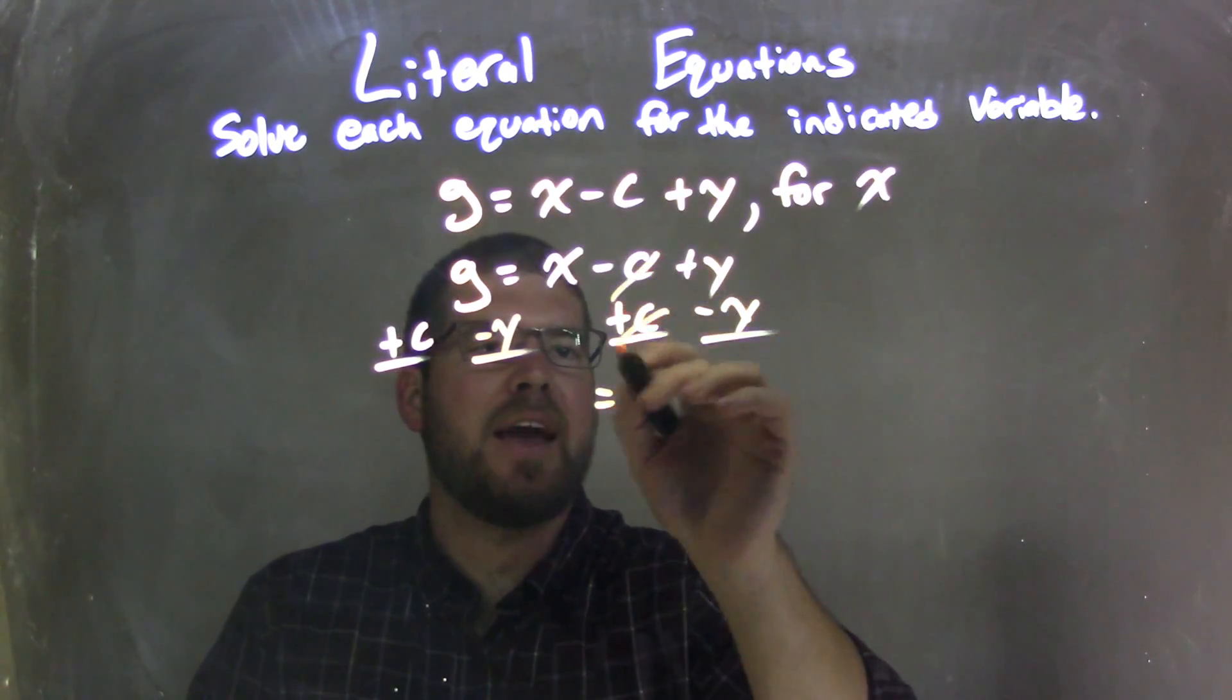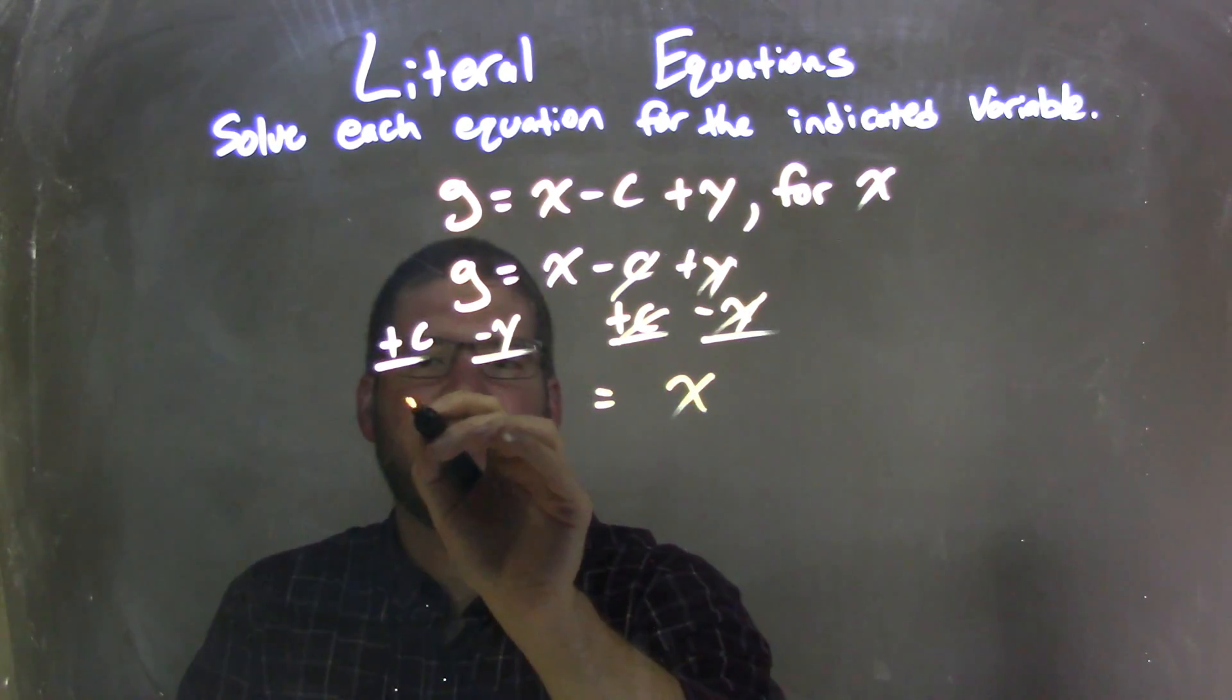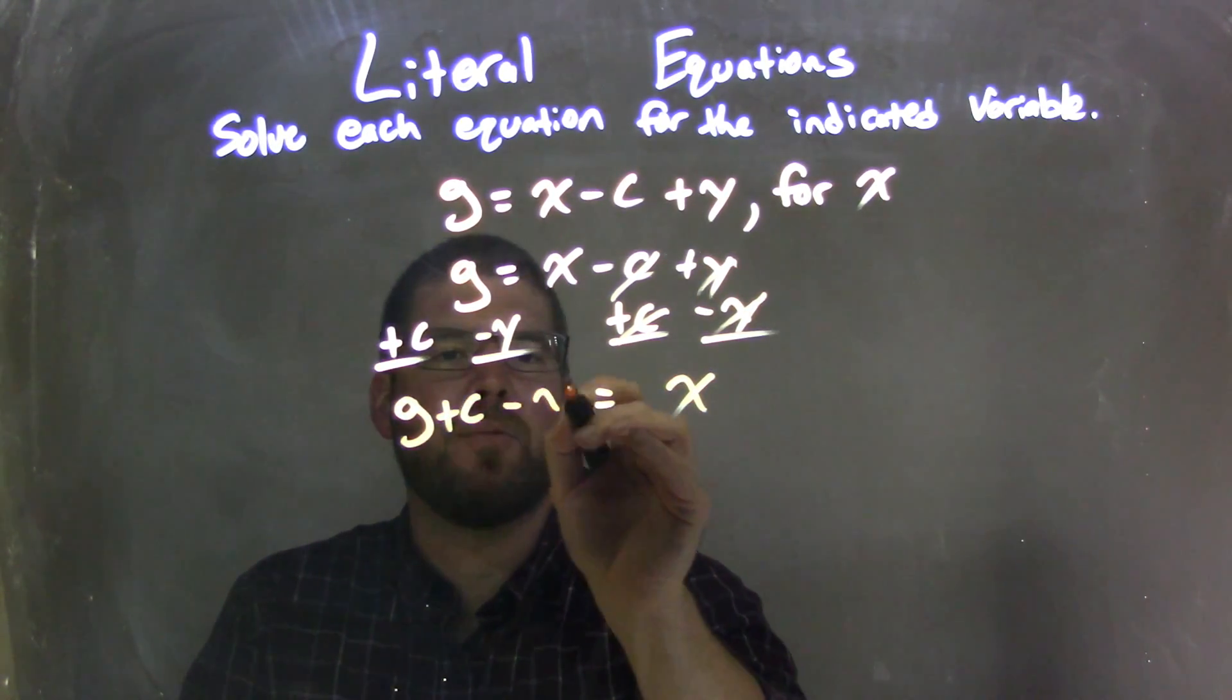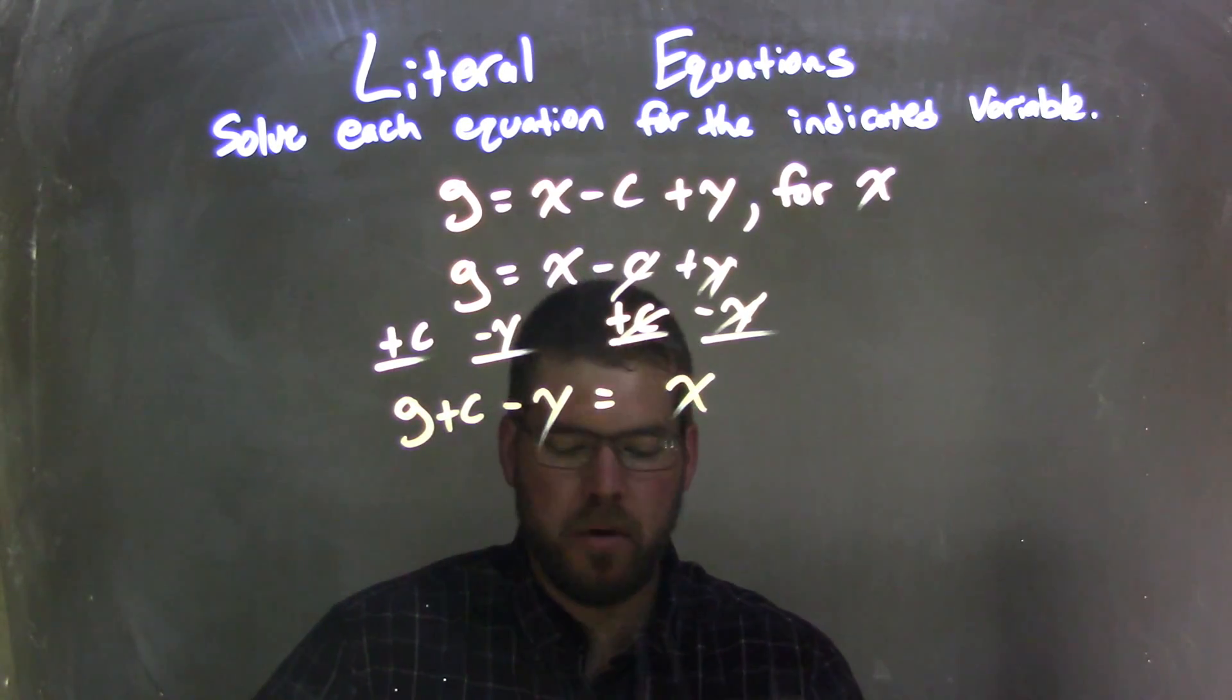That leaves me, well, these cancel, leaving me with an x on the right, and then I just have g plus c minus y here on the left. Pretty simple, right?